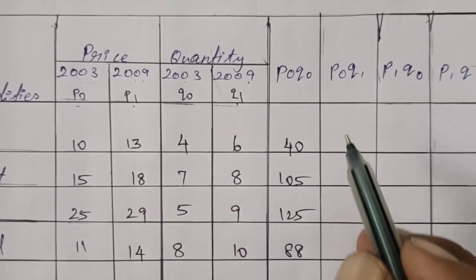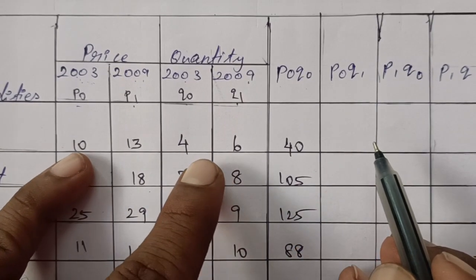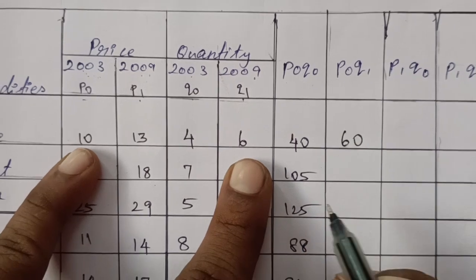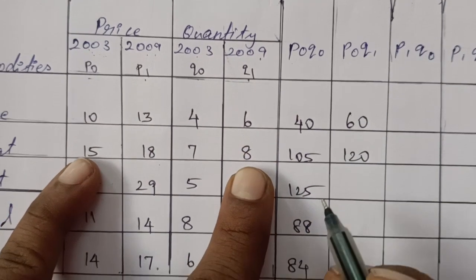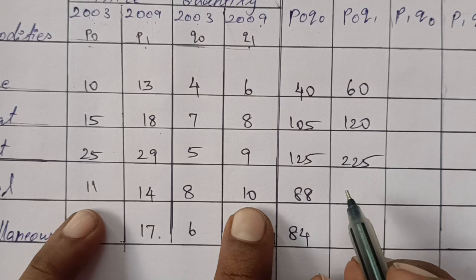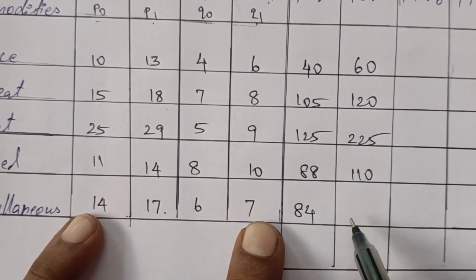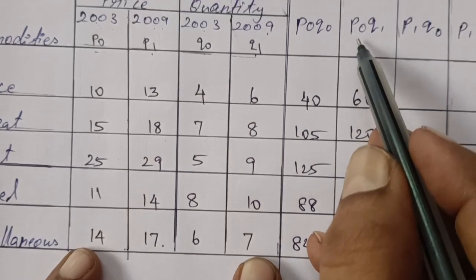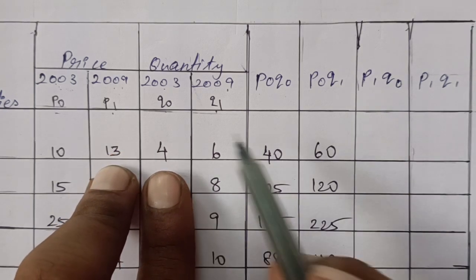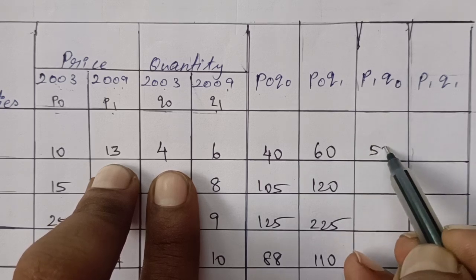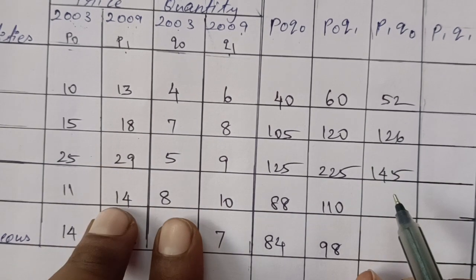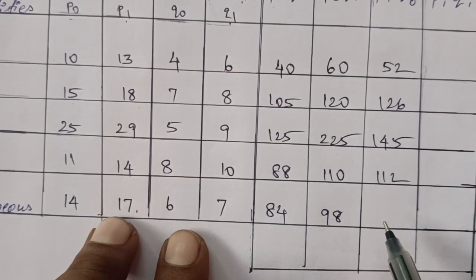For P0Q0, the summation is calculated. For P0Q1: 10×6=60, and further entries. For P1Q0: 13×7=52, 18×7=126, 29×5=145, 14×8=112, 17×6. For P1Q1: 13×6=78, 18×8=144, 29×9=261, 14×10=140.